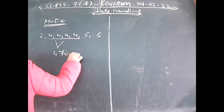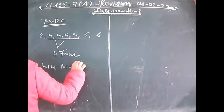Mode is the most frequently occurring item in the data. For example, if I have a data like 2, 4, 4, 4, 4, 5, 6 — then obviously 4 is occurring the maximum number of times, that means four times, so 4 will be the mode of the data. Mode is the most easiest measure of central tendency to detect — you just have to see which number is occurring the maximum number of times.